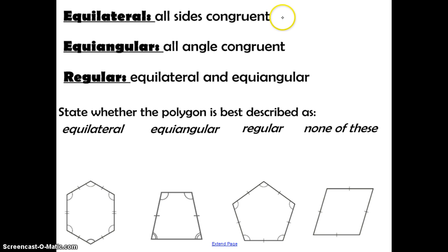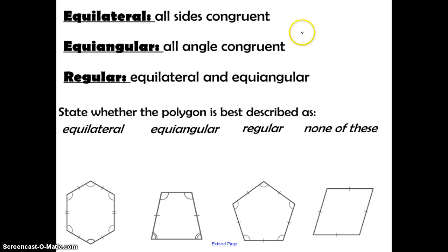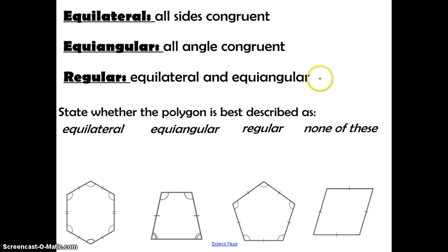Equilateral means that all sides are congruent. Equiangular means that all angles are congruent. When we talked about triangles, we said that if it's equilateral it's always equiangular and vice versa. However, for polygons with sides greater than three, you can be equilateral and not equiangular, and equiangular and not equilateral. We have another term called regular for polygons that are both equilateral and equiangular. Pause and state whether each polygon is best described as equilateral, equiangular, regular, or none of these.